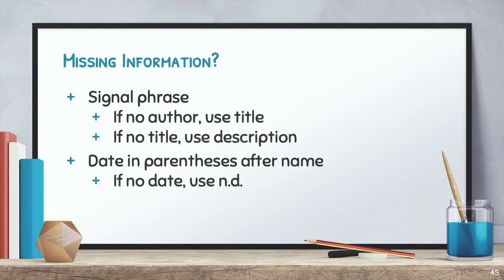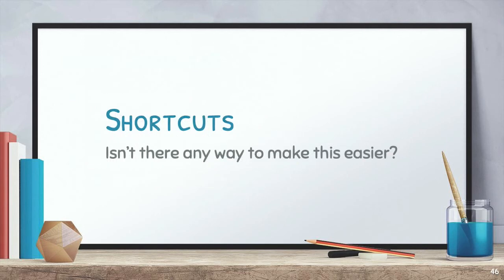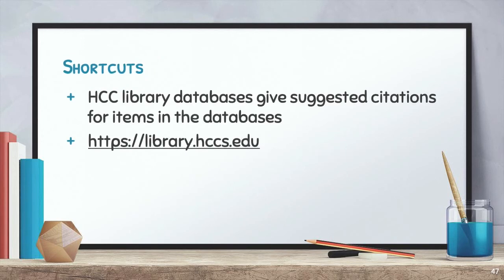Sometimes the original source is missing an author's name or a date or both. What do you do then? You refer to the entry in the references list. If you use a title in the first spot, that title will be what you use for the parenthetical citation. If you used a description, like for a photograph that doesn't have a known title or author, you will use that description in your parenthetical citation. HCC Library databases give you suggested citations for items in the databases. I will show you an example of a suggested citation and some changes you might need to make before using a citation that's provided by a database or generator.